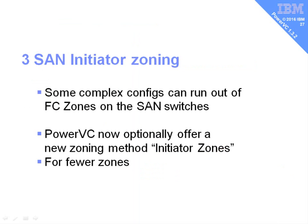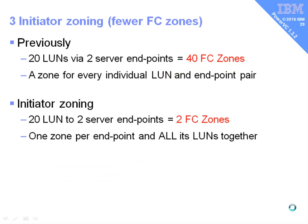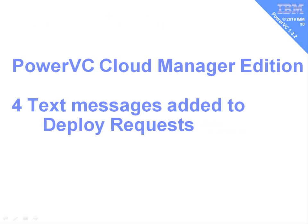In complex SAN configurations we can run out of Fibre Channel zones in a SAN switch. PowerVC now optionally offers a new zoning method called initiator zones for fewer zones. There's an excellent IBM article on this — I'll put the link on the YouTube page. Previously with 20 LUNs and two initiator server endpoints, you'd get one zone for every LUN-and-endpoint pair, totaling 40 zones. With initiator zoning, the initiator and all its LUNs go into one zone, giving a drastic reduction in zone count.